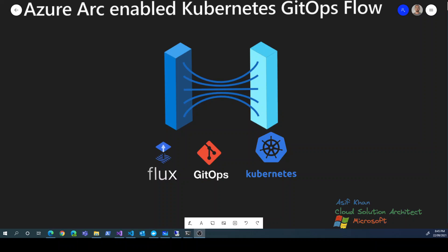Hi, my name is Asif Khan and I'm a Cloud Solution Architect at Microsoft. In today's session, we will be discussing Azure Arc-enabled Kubernetes with GitOps Flow.